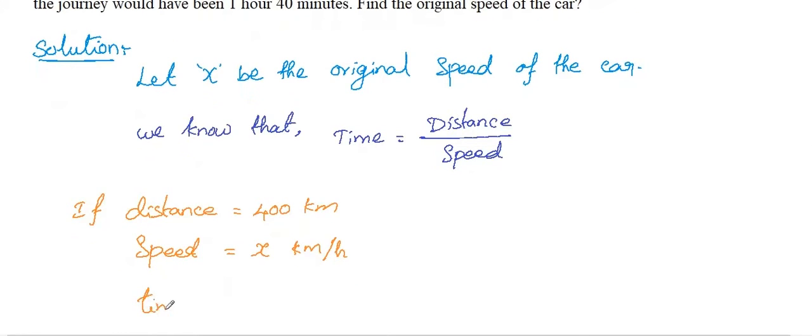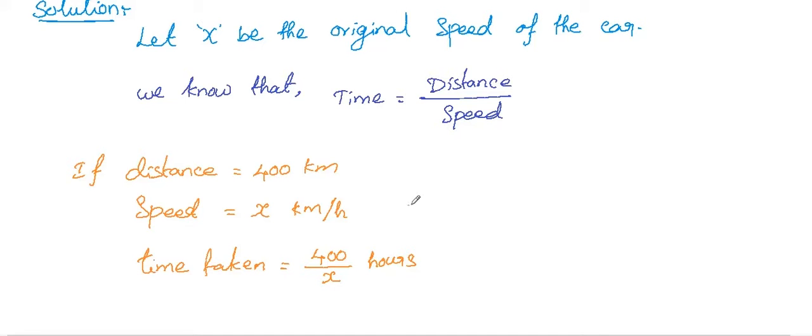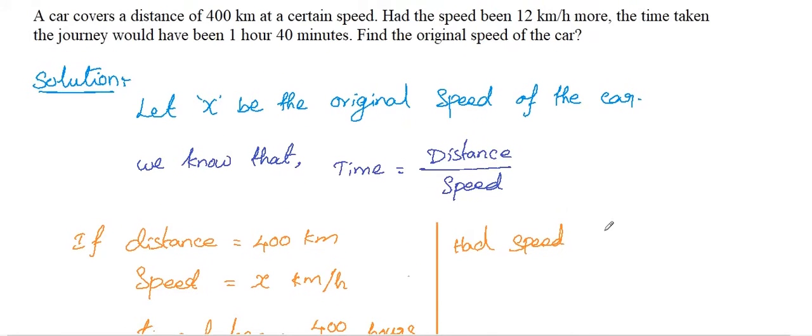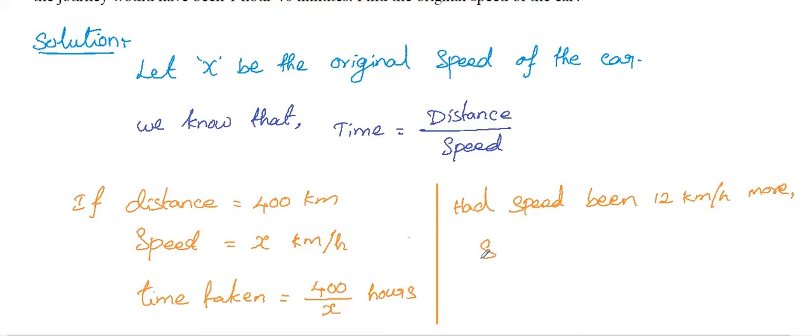The time taken for the total distance is 400 divided by X hours. If the speed of the car is increased by 12 kilometers per hour, then the speed will be X plus 12 kilometers per hour.